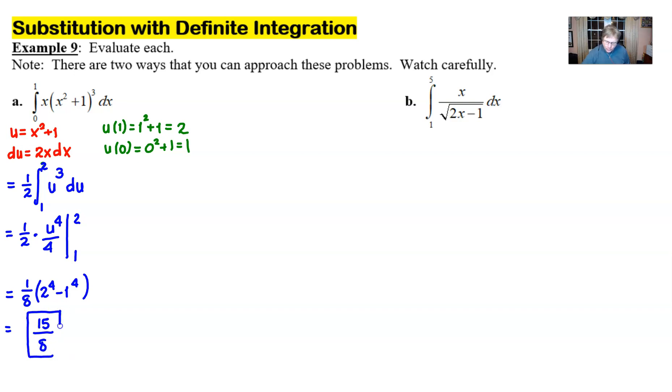Now what would be the other option? Well the other option neglects this green step. Instead we just proceed with what we were doing earlier with our one half out in front our integration of u to the third du but instead of putting our boundaries here we just put some temporary placeholders.